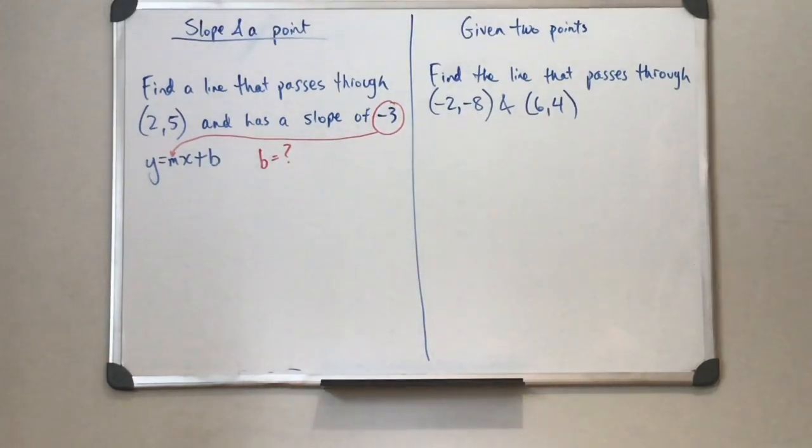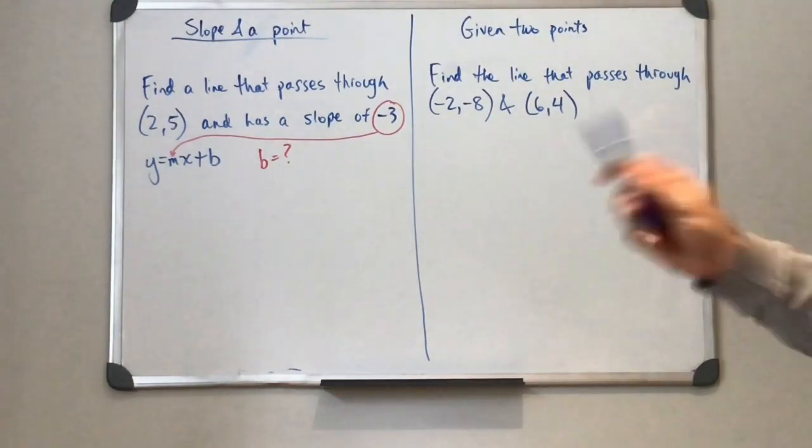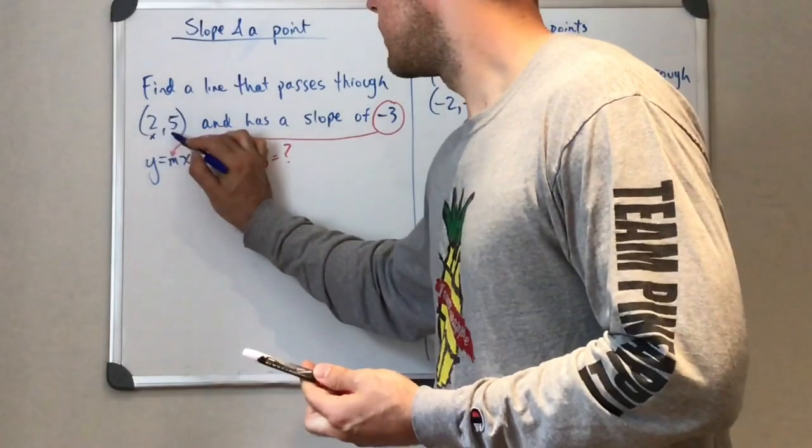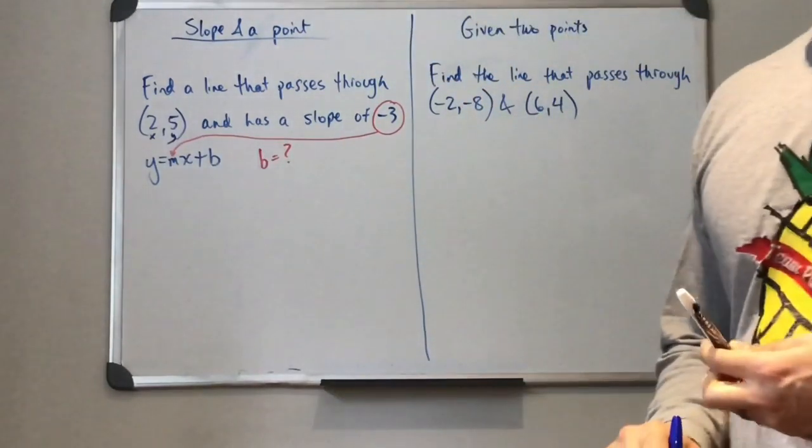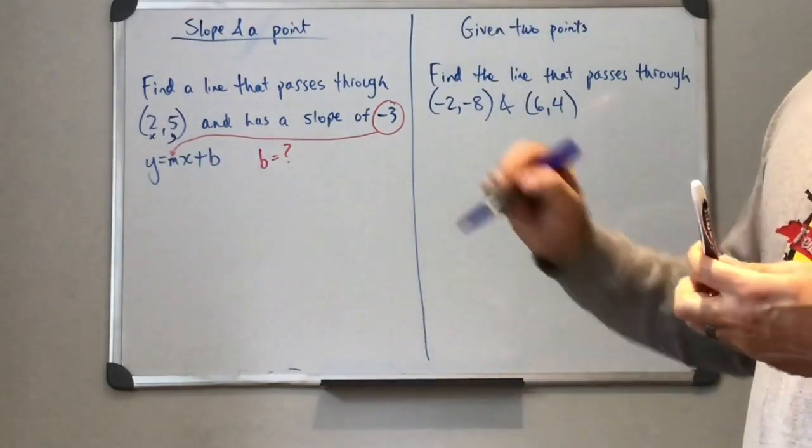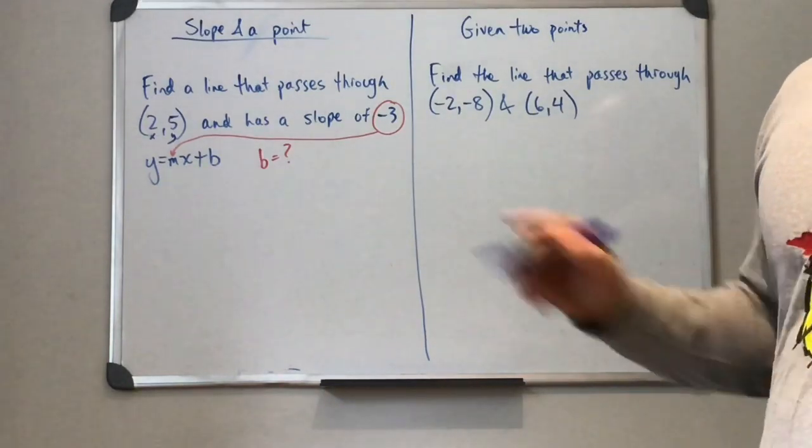So we're going to need to calculate that b somehow. Now, the only way we can do it is subbing in some x and y values into the equation to help find that y intercept. So let's see how that goes.